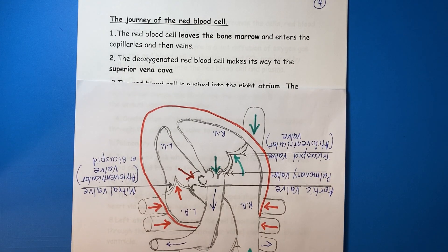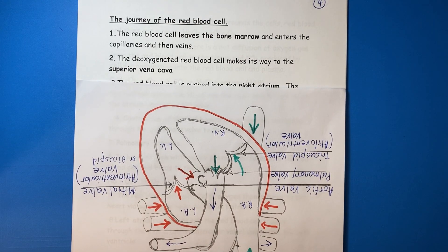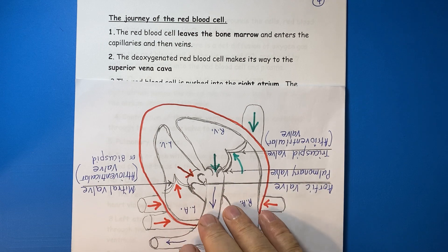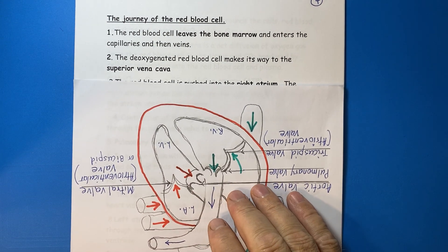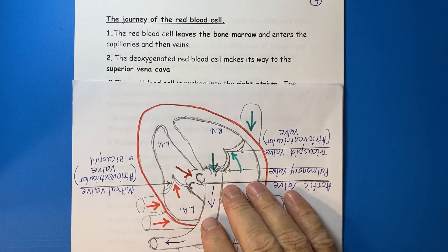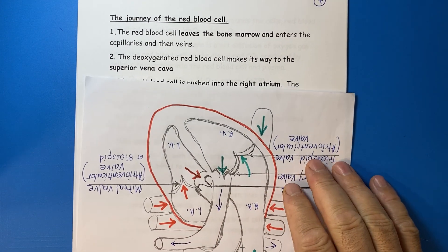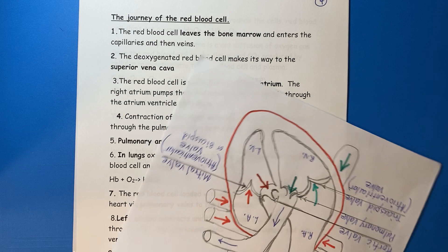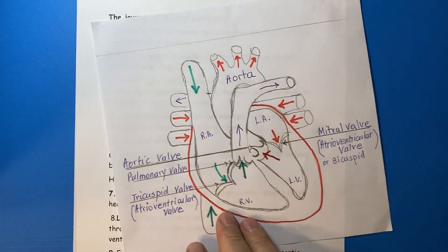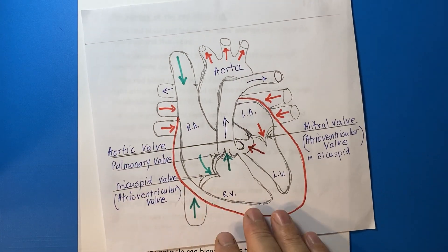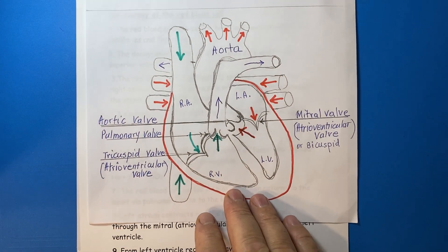Next, the journey of the red blood cell. Before tracing the path of a red blood cell, let's look at the valves of the heart.